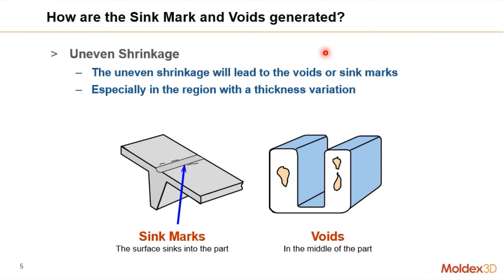But what do we mean by sinks, and more importantly, why do we get sink marks? The root cause, if you peel all the layers out, is uneven shrinkage in the part — you don't have uniform shrinkage. Because the material is shrinking differently in different regions, that is what leads to either sink marks on the surface or voids in the core of the part. This is especially true where you have thicker sections in your part.